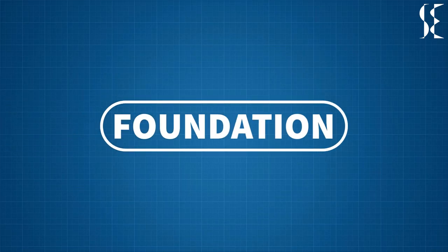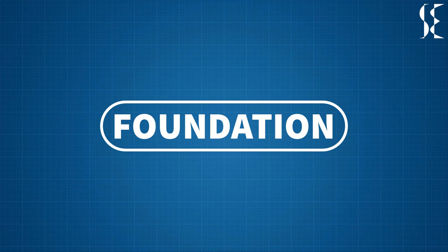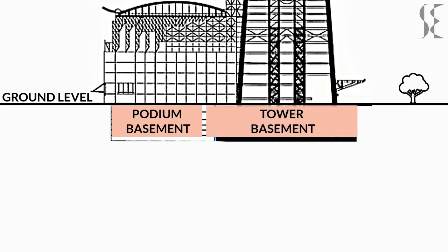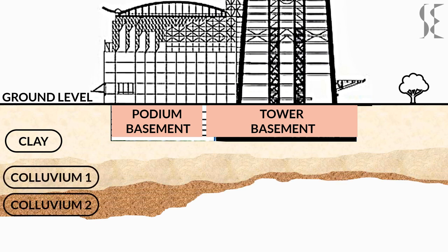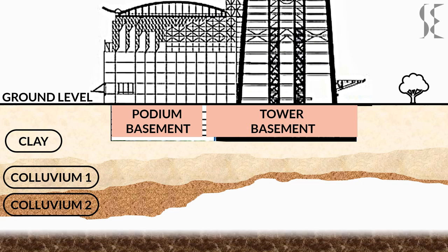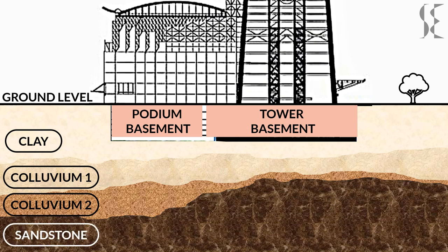Now let us look at foundation system used for the building. Here we are seeing the building section with ground level and basement for podium and tower. Soft soil in the form of clay and stiff colluvial soil is present just below the site of Taipei 101, which has low load-bearing capacity. Soft rock in the form of sandstone is present beneath 40 to 60 meters, hence it required a mat foundation with bolt piles.